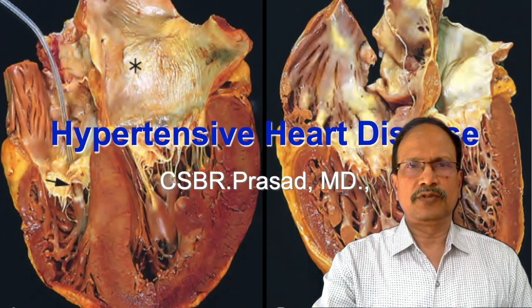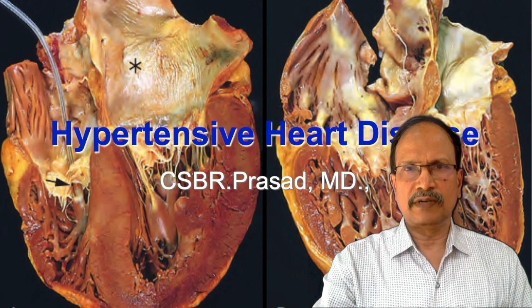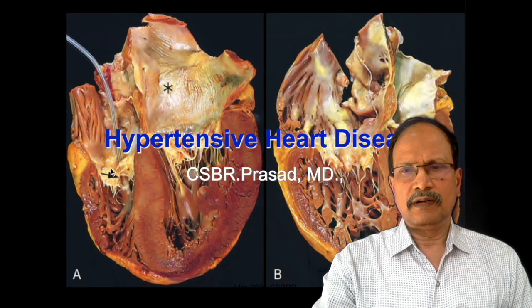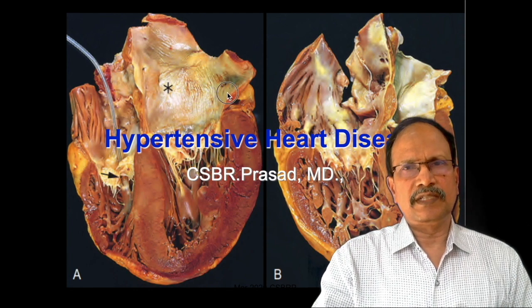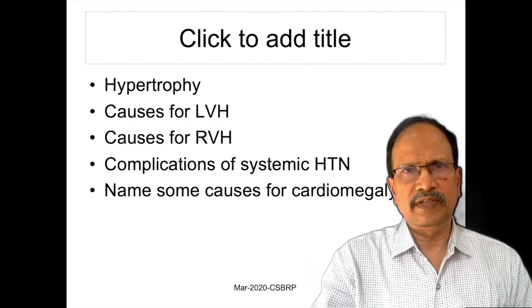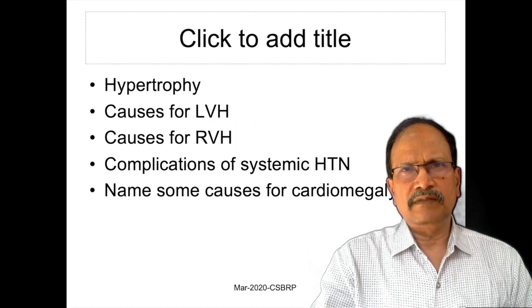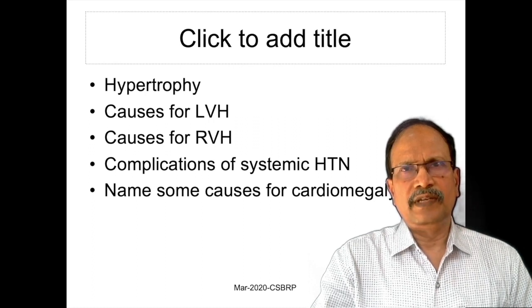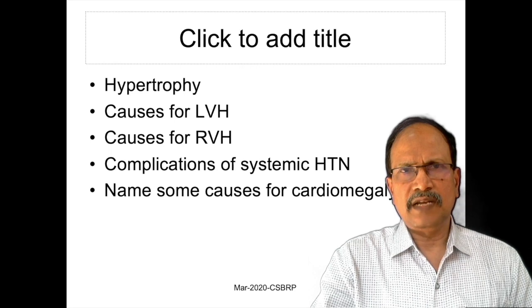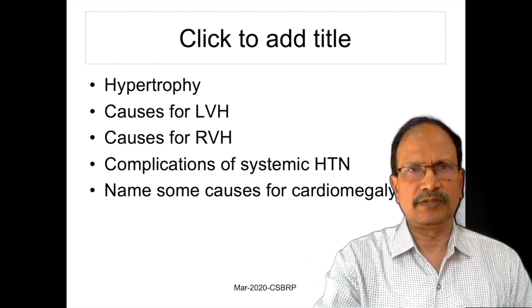Hello students, we are going to deal with hypertensive heart diseases. Before going into that, you should know these terminologies. Hypertrophy: in hypertrophy, the individual cell diameter increases while the cell number stays the same in a given tissue.